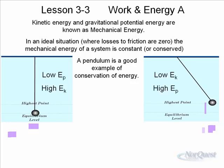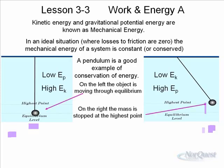We go through this argument. On the left, the object is moving through the equilibrium position. On the right, the mass is stopped at the highest point. If no energy was lost, the system would oscillate back and forth indefinitely.